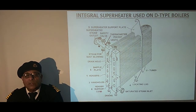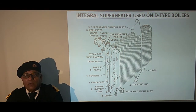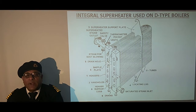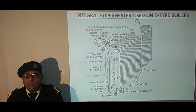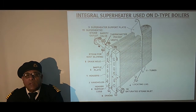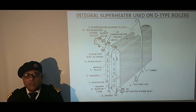Then we have handholds opposite the tubes to get access to the internals. Then we have drains on both headers. Then we have a drain hole in the baffle plate so that condensate can go to the bottom and be removed from the drains. Then we have the saturated steam inlet at the bottom. We have the superheated steam outlet at the top. We have a safety valve, a thermometer pocket, and a vent on each header.